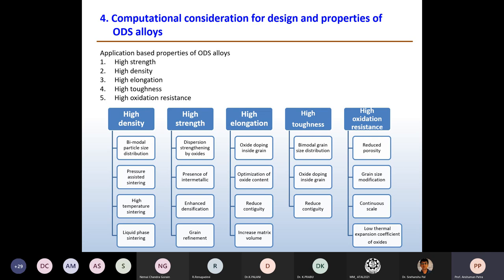High oxidation resistance can be achieved by reduction of porosity, grain size modification — going coarser somewhat gives lesser grain boundary area reducing oxidation — and by ensuring continuous scale formation. Oxides with a low thermal expansion coefficient can also provide suitable improvement in high oxidation resistance.